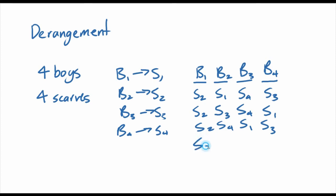And yeah, so right now we see that... Are there any other combinations that work if boy one has scarf two? I don't think so. Because boy two could have either scarf one, scarf three, or scarf four, not scarf two, because boy one has taken it. And then that leaves one combination for each of these. Okay, so we have three possible derangements, I should say, in which boy one has scarf two.